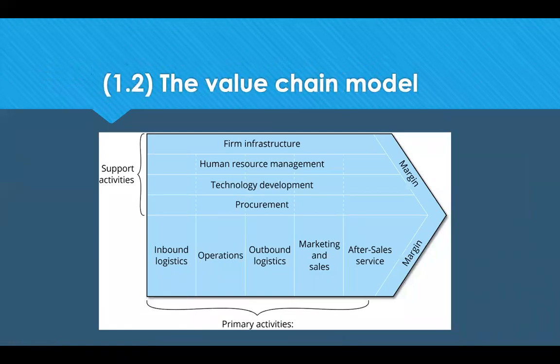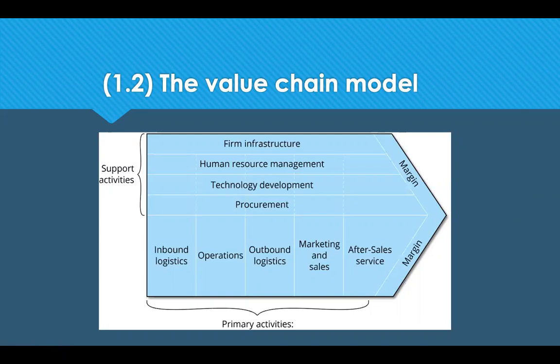Moving on to section 1.2: Porter's Value Chain model. In 1985, Professor Michael Porter published his work on the value chain, now a widely accepted model of how organisations in the private sector earn profits, forming an important part of many corporate strategies. There are a number of primary activities in an organisation, but these cannot function without support activities such as procurement, whose role is to acquire all resources and other inputs the organisation needs to carry out those primary activities.